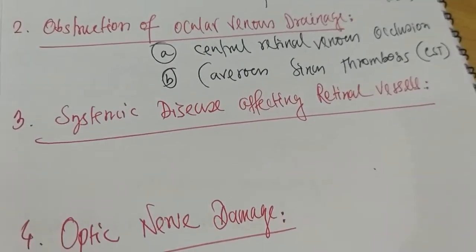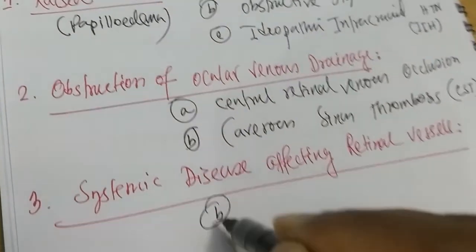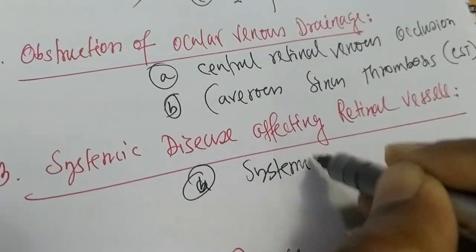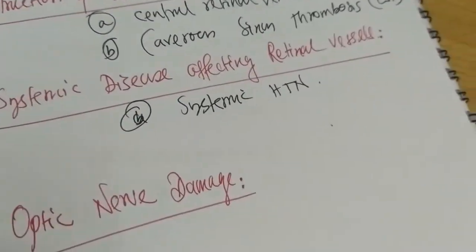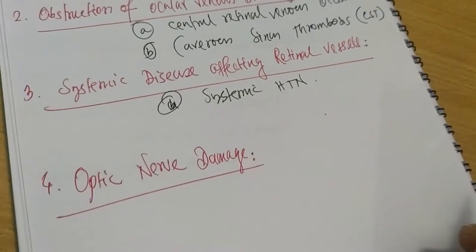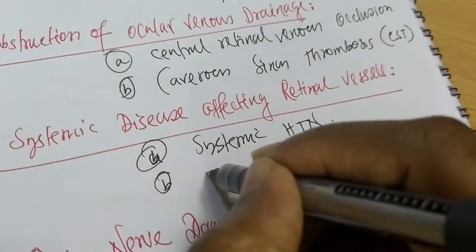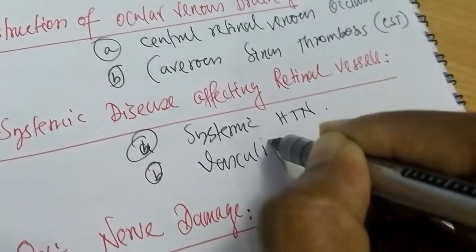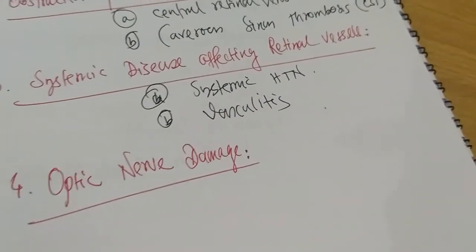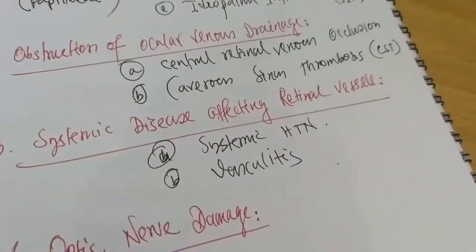Number three: systemic disease that may affect the retinal vessels. Number one is systemic hypertension. In systemic hypertension, we find on fundoscopy bilateral papilledema. Another one is vasculitis. So systemic diseases — mainly systemic hypertension and vasculitis — can cause optic nerve damage.